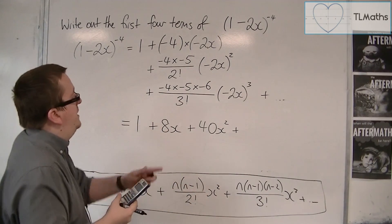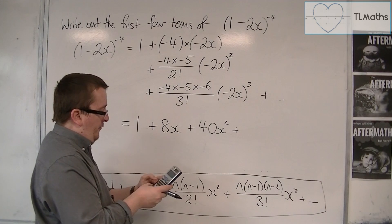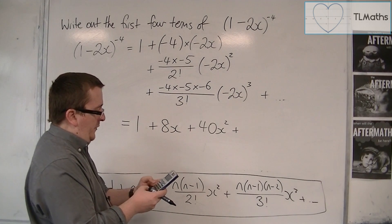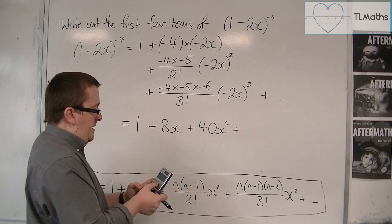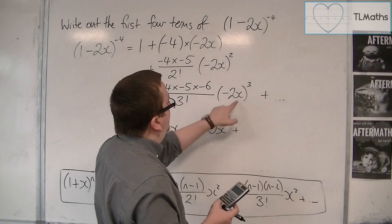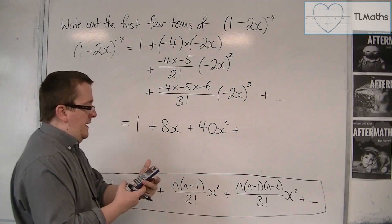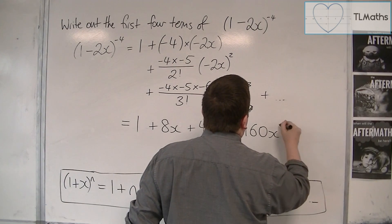For this one, using a fraction button, -4 times -5 times -6, over 3 factorial, so 1 times 2 times 3, times -2 cubed. And we get 160. So that's 160x³.